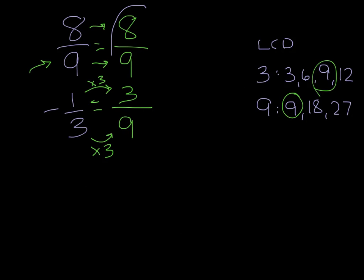Now, I have 8 ninths minus 3 ninths, and because the denominators are the same, I can just subtract, and I get 5 ninths, and that would be my answer.